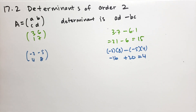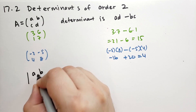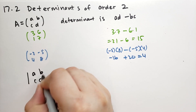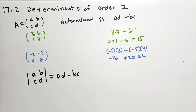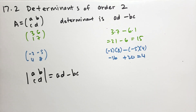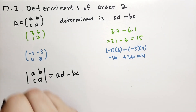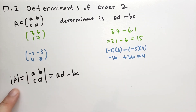We can also use straight lines to represent the determinant. So we write the determinant with straight bars around the entries: |A, B; C, D| equals AD minus BC. If you see straight lines around a matrix, that means you're taking the determinant. And if you wanted to take the determinant of a named matrix, you could just put the bars around the matrix name.